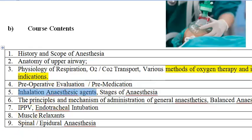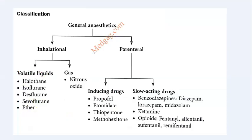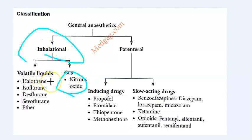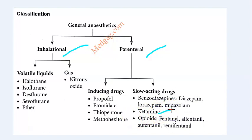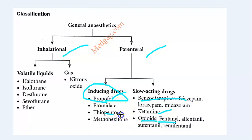Inhalation anesthetic agents — classification you have already seen. Inhalational agents include nitrous oxide, especially for obstetrics, and halothane. Then for parenteral anesthesia: ketamine for dissociative anesthesia, opioids, fentanyl, benzodiazepines, propofol, and thiopentone — all these are important names.